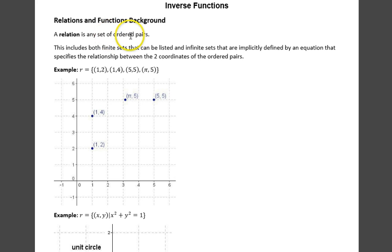A relation is any set of ordered pairs. This can include a finite set or an infinite set. Infinite sets can be specified implicitly by an equation specifying the relationship between the x and y coordinates of each ordered pair.